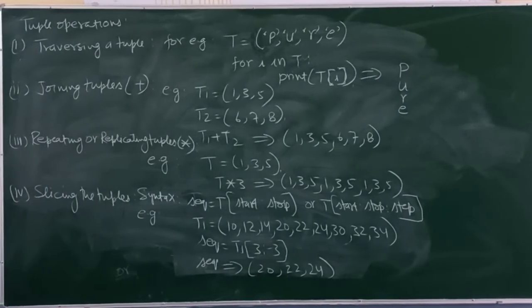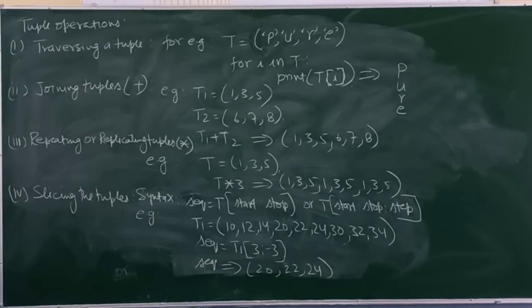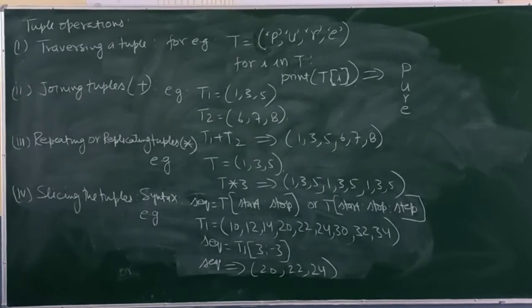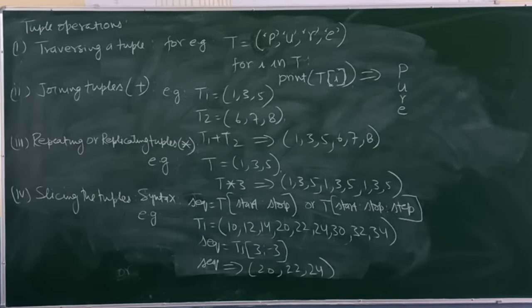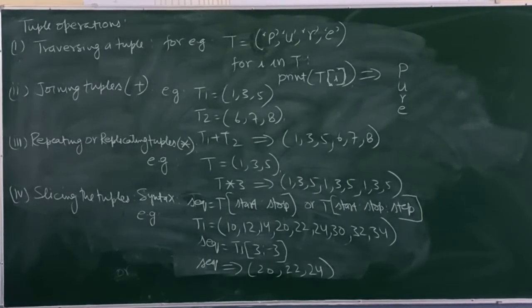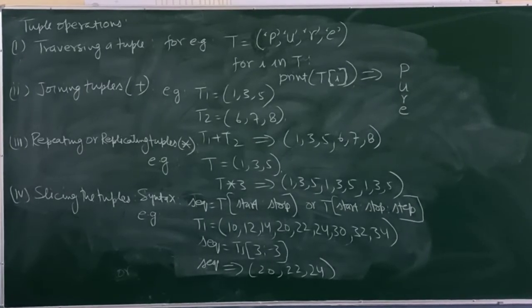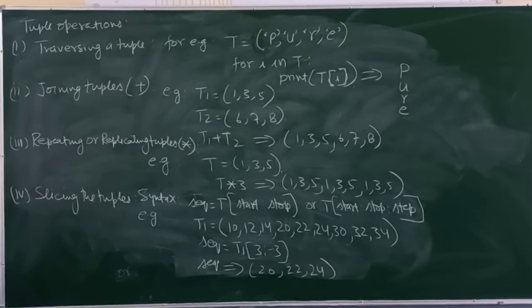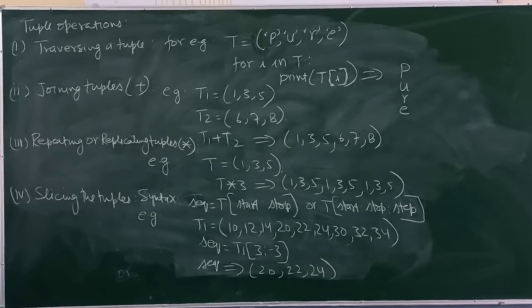For I in T colon, print T square bracket I will give you P in the first line, U in the second line, R in another line, and E in another line. Next is joining the tuples.